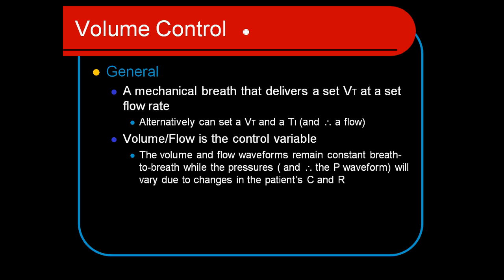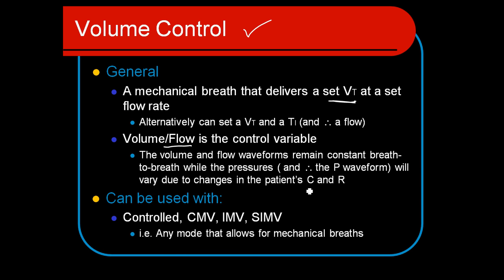The key thing about volume control ventilation is we set a critical tidal volume. That's important because that combined with the respiratory rate allows us to control minute ventilation. We know that the volume and flow relationship are linked together, and that volume-flow relationship determines how quickly the breath will be delivered and how large the breath will be. The pressures within the lungs are controlled by the patient's lung compliance. The resistance is also a factor. This can be used with the breath types of CMV or IMV.